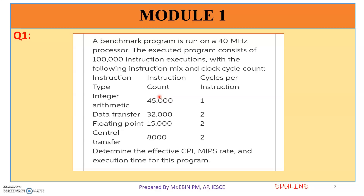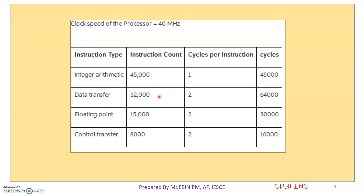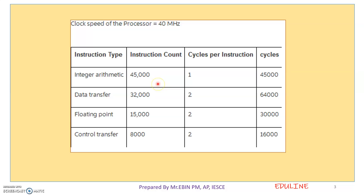The processor speed is 40 MHz — this is the clock speed of 40 MHz. We have instruction type, instruction count, and cycles. The instruction counts and cycles per instruction are given. If you execute these 45,000 instructions, it will be done in the total cycle.